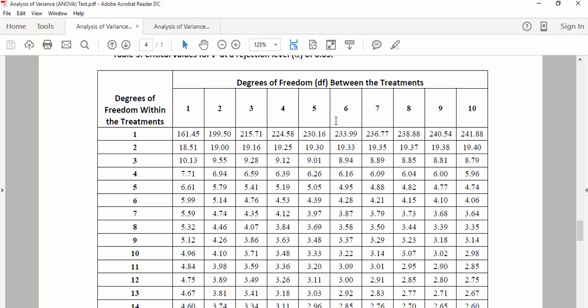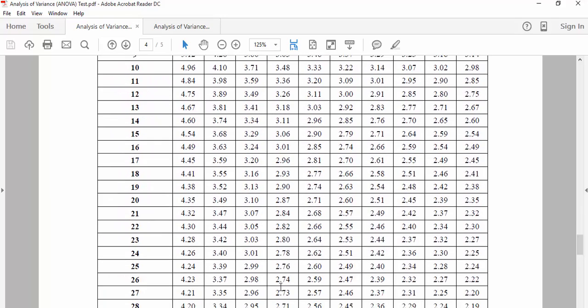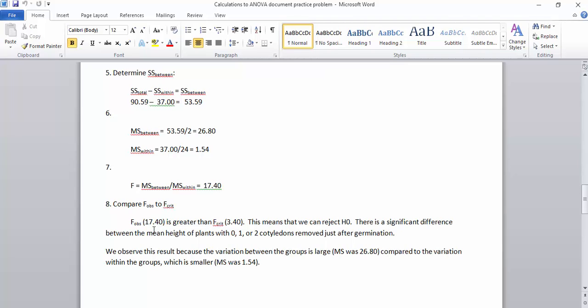If we go to our table of critical values in the ANOVA test, we have to take into consideration our degrees of freedom between the treatments in addition to our degrees of freedom within the treatments. With the T test, we only had two groups, so our degrees of freedom between would have always been one. In this case, we have three groups, so our degrees of freedom between is two. We calculated our degrees of freedom within to be 24. If I'm in the second column and I come down to 24, my critical value is 3.40. So my observed F value was 17.40. If the value is larger than the critical value, which in this case was 3.40, then this means we can reject the null hypothesis. We can say there is a significant difference between the mean height of the plants with 0, 1, or 2 cotyledons removed.